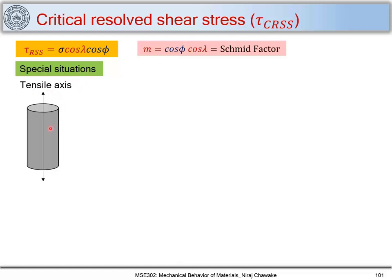Consider a single crystal where the slip plane is perpendicular to the tensile axis. In this case the slip direction D will make an angle lambda = 90° with the tensile axis, and using the relation we find tau_RSS = 0.